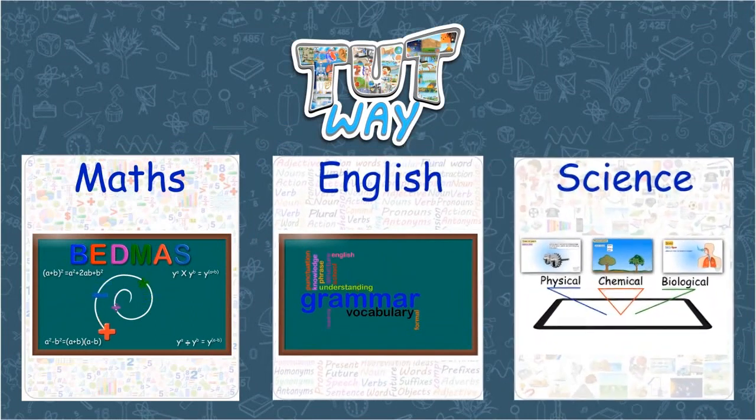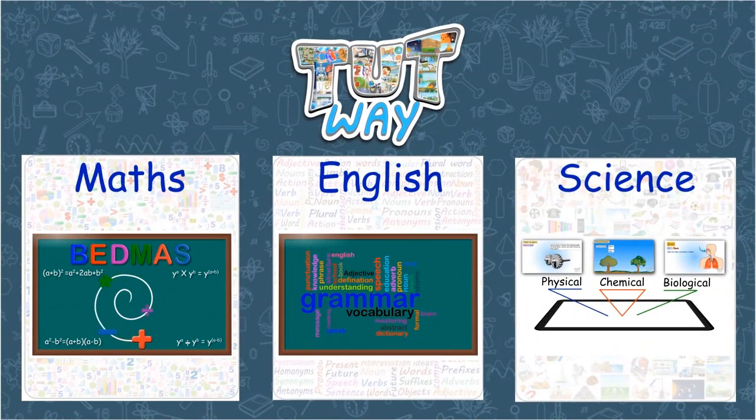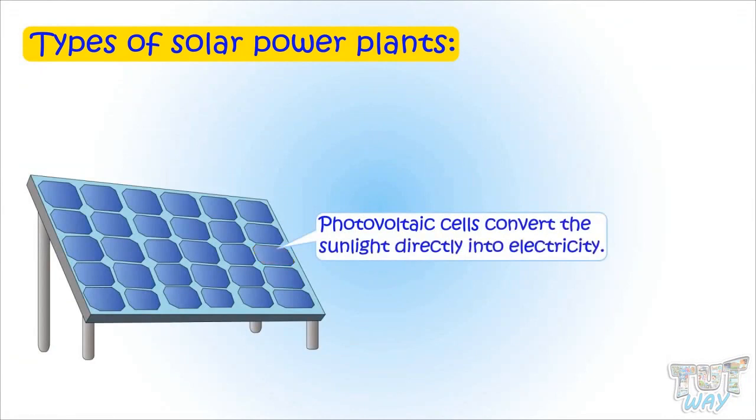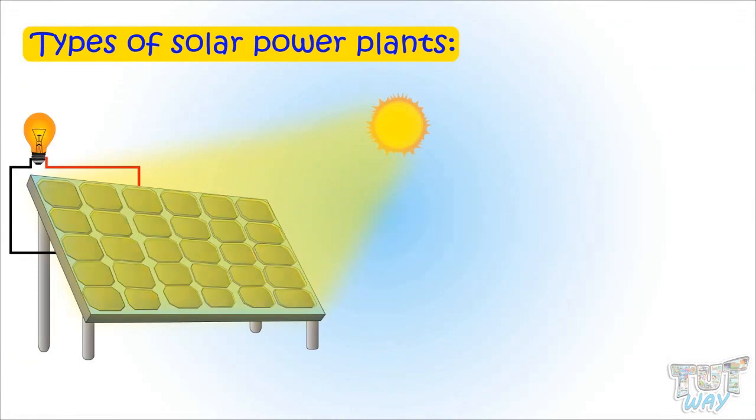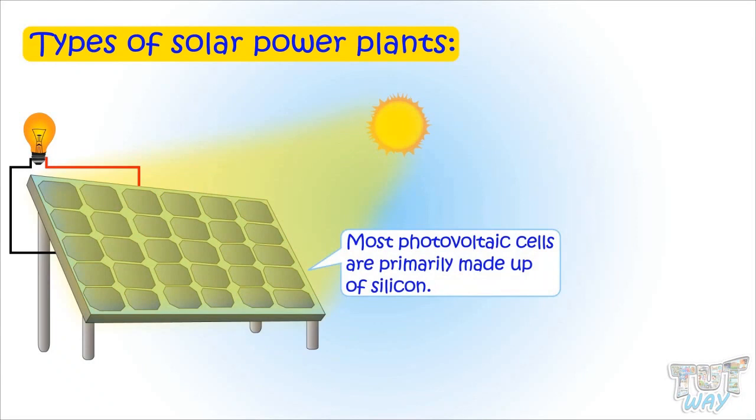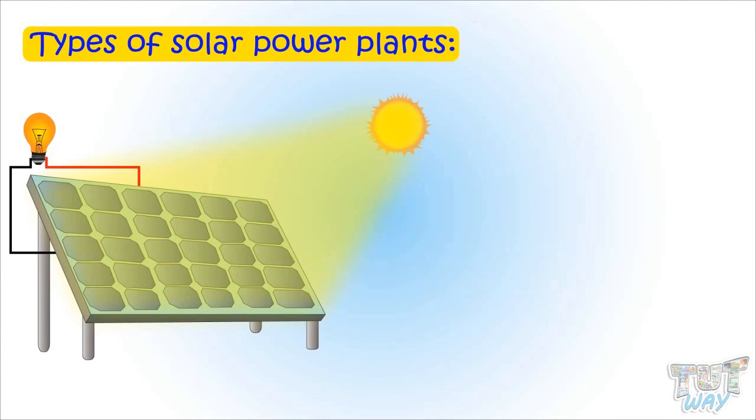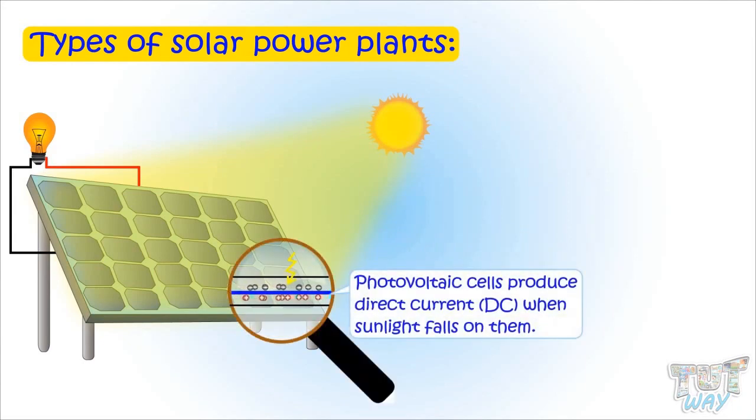Solar power plants are of many types. One type uses photovoltaic cells that convert sunlight directly into electricity. These cells are arranged on big rectangular panels. Most photovoltaic cells are made primarily of silicon. When sunlight falls on these cells, they produce direct current.